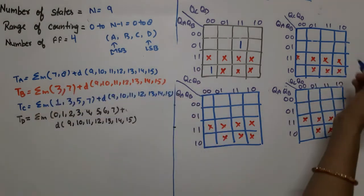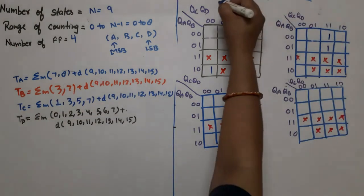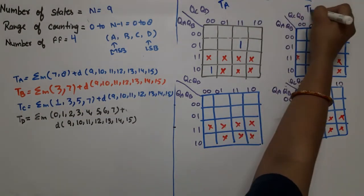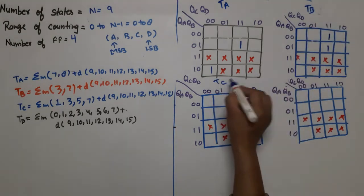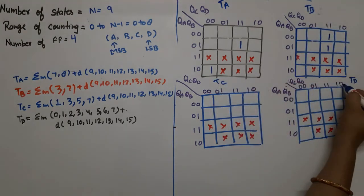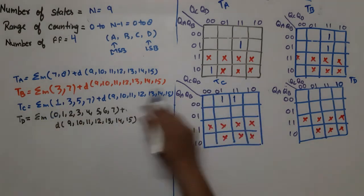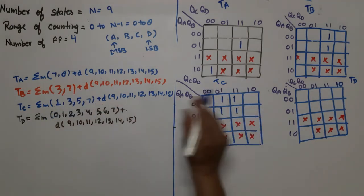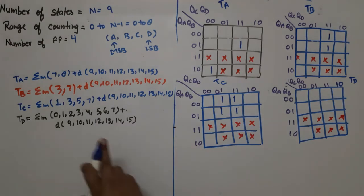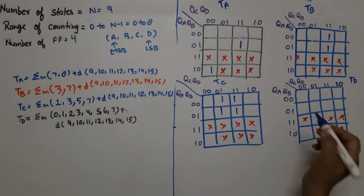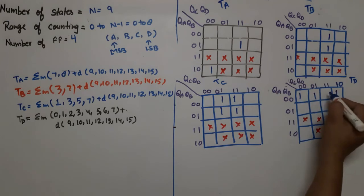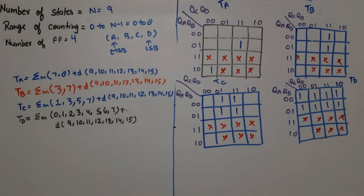For TB, the minterms are 3 and 7. For TC, the values are at 1, 3, 5, and 7. For TD, minterms are at 0, 1, 2, 3, 4, 5, 6, 7 (everywhere except 8). Now we simplify, starting with TA.